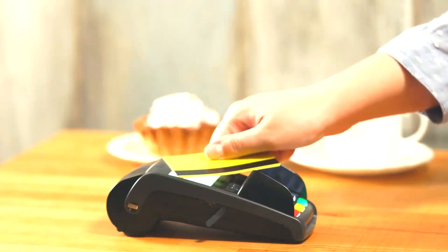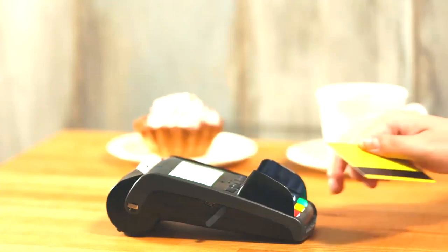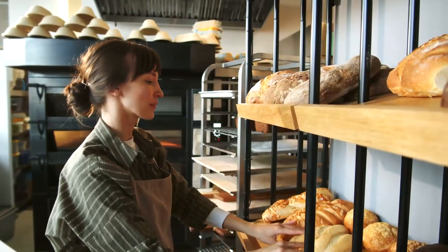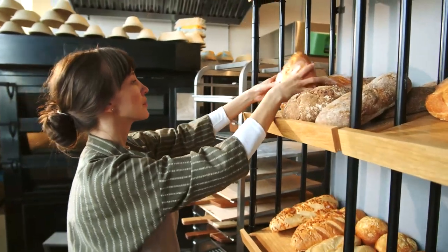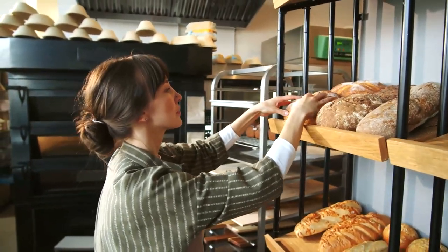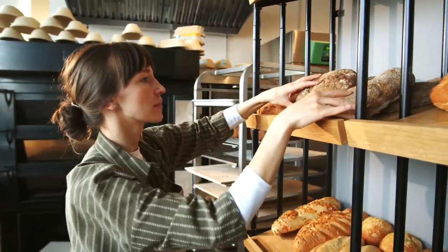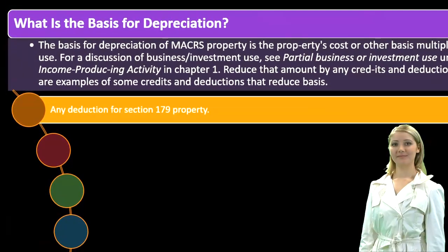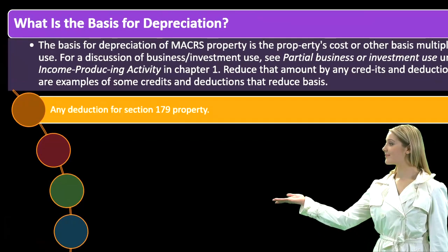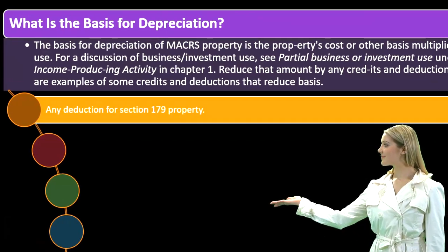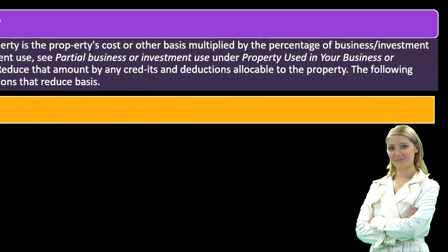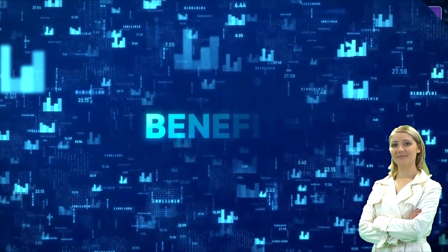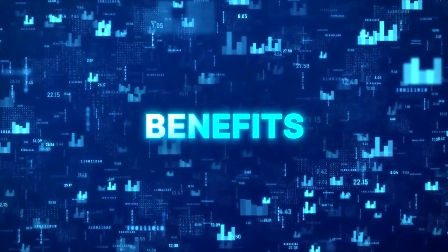As a general rule, if we bought equipment that was 100% for business, the cost or basis is essentially what it is. Under normal depreciation — straight-line — you'd just take an equal amount of expense over the life of the asset.